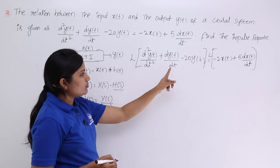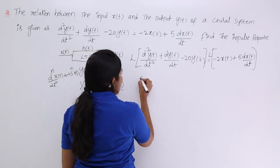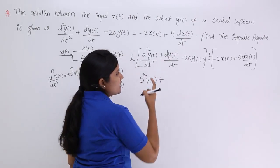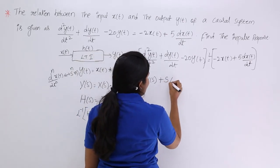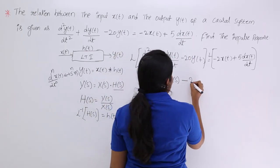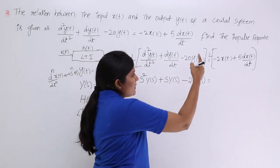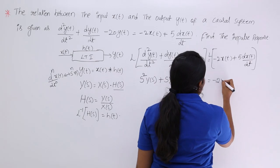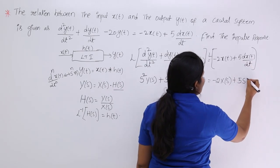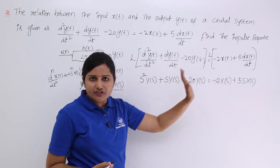Taking the Laplace transform of both sides and applying the differentiation property: s²·Y(s) + s·Y(s) − 20·Y(s) = −2·X(s) + 5s·X(s). Each differentiation in time becomes multiplication by s in the frequency domain. This is how we write the Laplace transform of the differential equation.